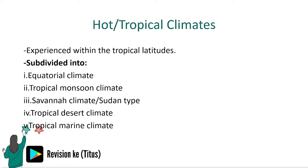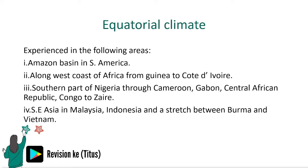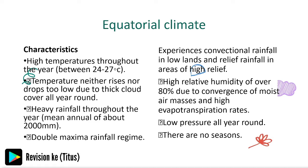The equatorial climate is experienced in the following areas: the Amazon Basin in South America; along the west coast of Africa — southern parts of Nigeria through Cameroon, Gabon, Central African Republic, Congo to Zaire; and in Southeast Asia — Malaysia, Indonesia, and a stretch between Burma and Vietnam. Notable characteristics include no seasons and low pressure all year round.